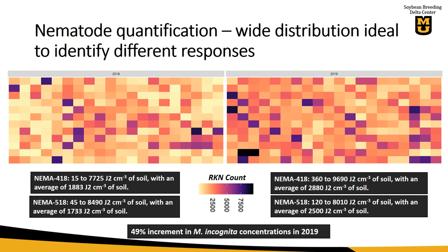This is how we looked at the 2018 and 2019 data. The lighter the color, the lighter the nematode pressure was. The darker the color, the more nematodes we had per plot. Each of these squares represents one yield plot in the field.